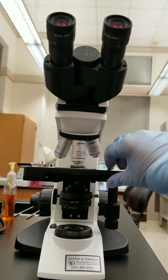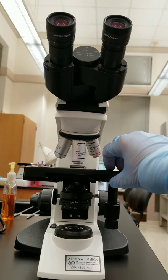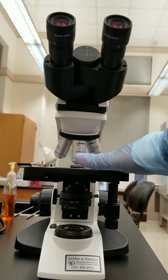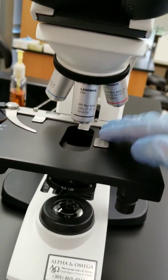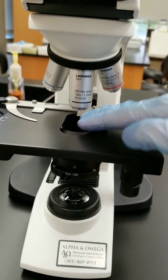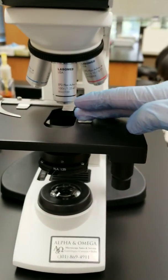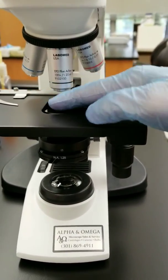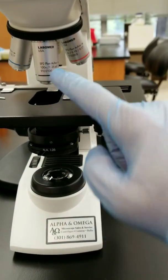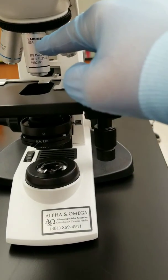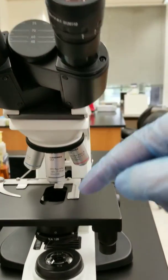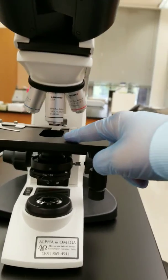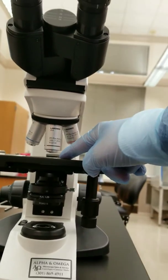This is the stage, which holds the actual slide. There are stage clips up here that hold the slide, and you put the slide across this hole so that light can shine through the bottom, up through the slide, then come through the objectives and through the oculars into your eyes so you can see what's on the slide.